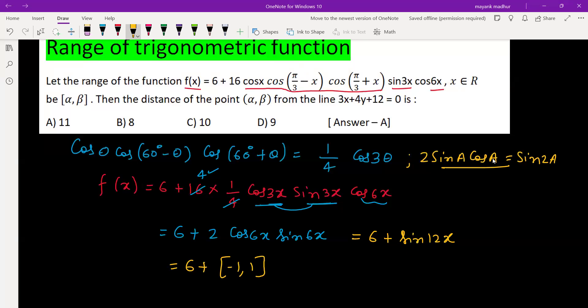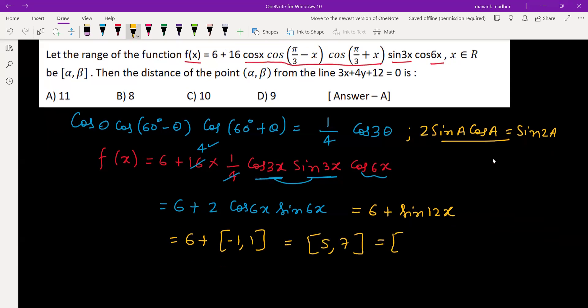So when you are adding minus 1, it will be 6 minus 1 equals 5, and 6 plus 1 equals 7. So range is 5 to 7, which is your alpha to beta. So alpha is 5, beta is 7.